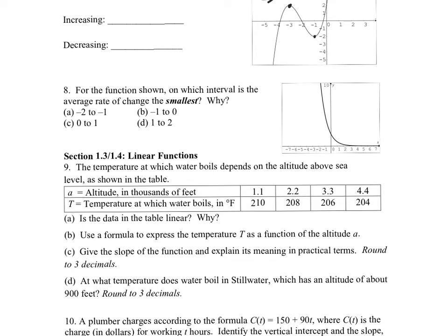A good way to remember: if from left to right the value is going up, we're increasing. So we're increasing from negative infinity to negative three, and also from negative one to infinity. We're decreasing in between, from negative three to negative one.